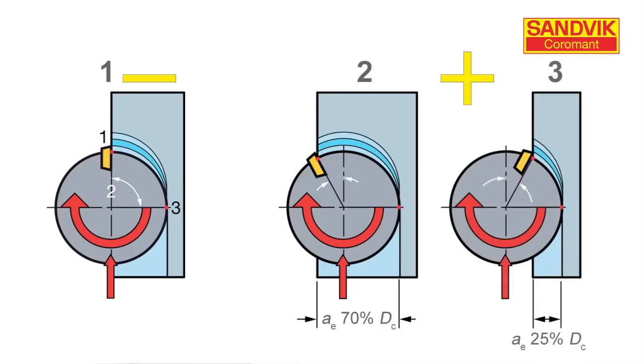In the third picture, the cutter is only a small radial engagement. This is also a good position, but here we need to optimize the cutting data to ensure optimized productivity.